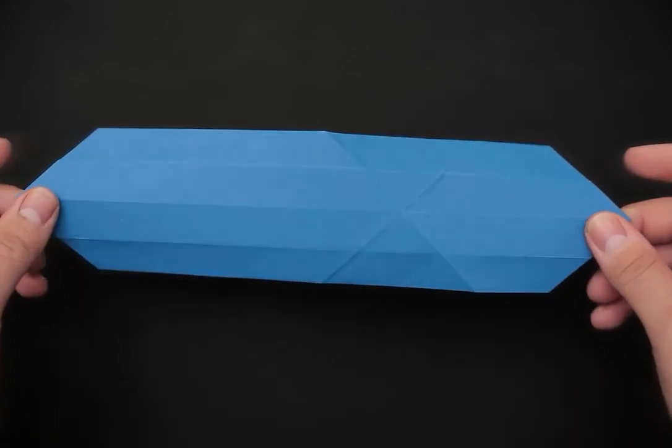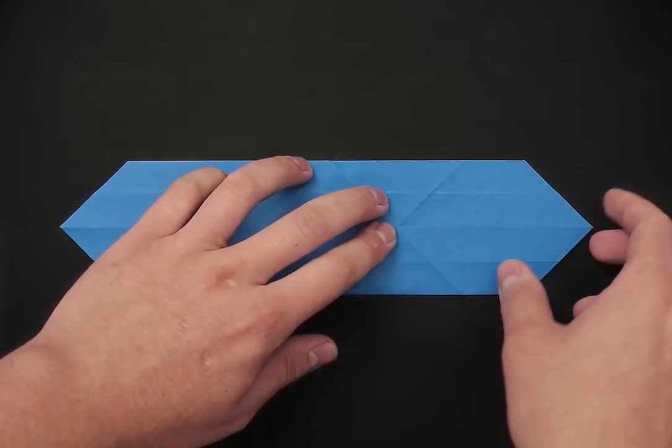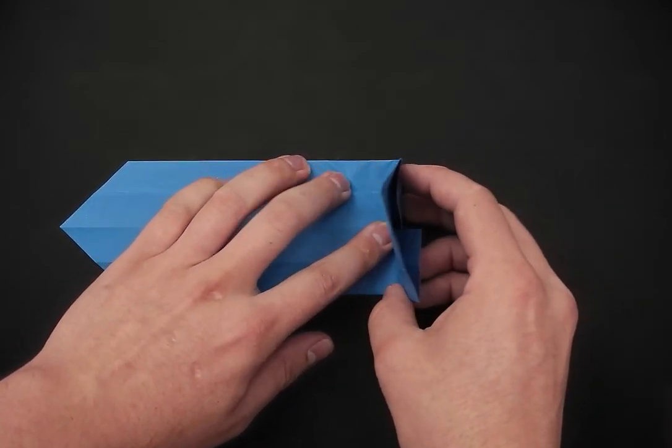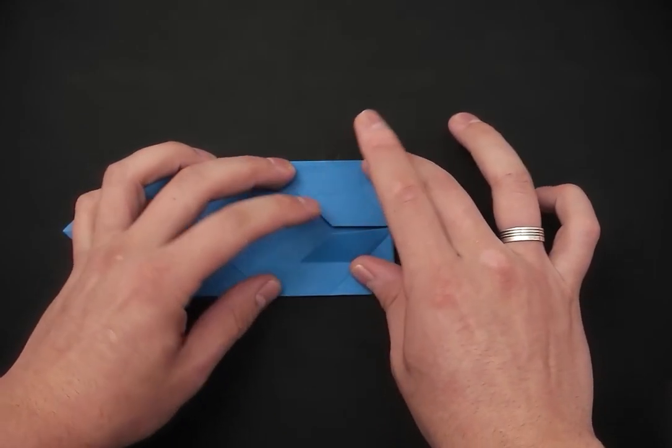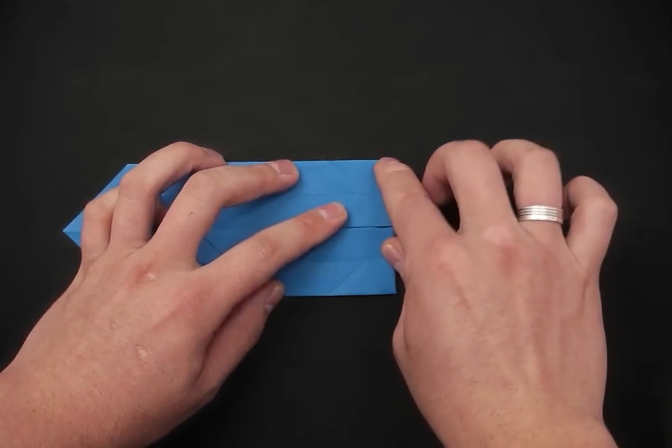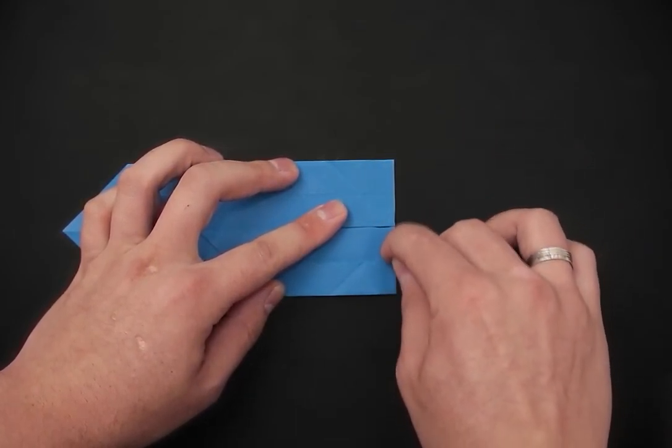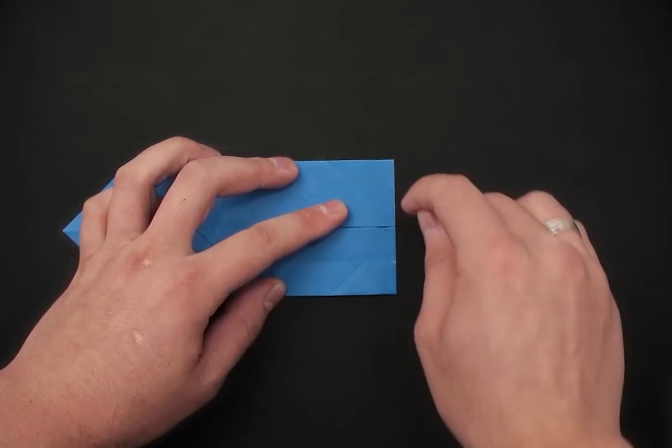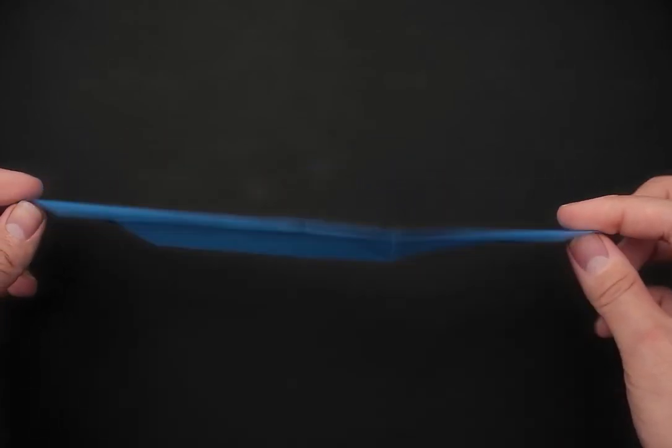Let's turn it over and fold the same X in half. For this we're going to bring the right side to the left by placing one line on top of the other, leaving everything very well aligned. Then unfold and turn it over again.